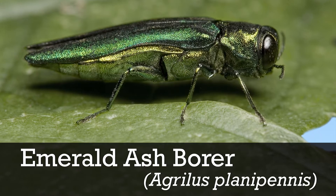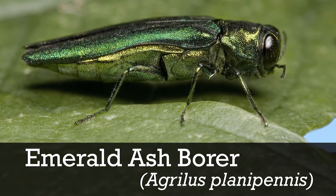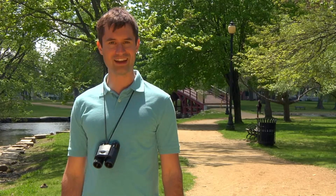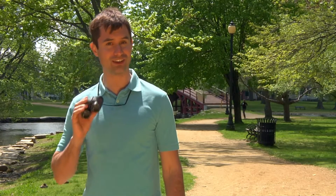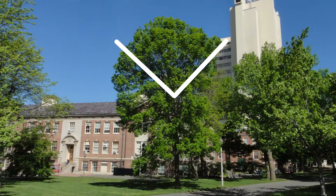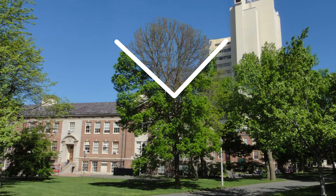To detect an emerald ash borer infestation, follow these tips. Start by using just your eyes or paired binoculars to scan the top third of the ash tree for yellowing or missing leaves or dying branches.